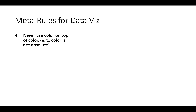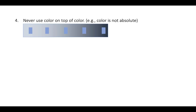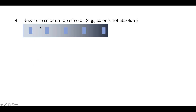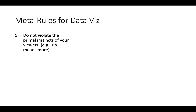Rule four is to never use color on top of color, because color comparison visually is not absolute. If you look at these five rectangles, your brain tells you they are different colors — but if you've seen the video on basic visual perception, you know that all five of these squares are exactly the same color.